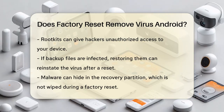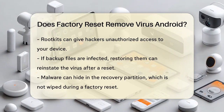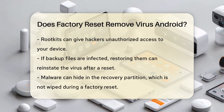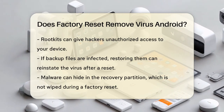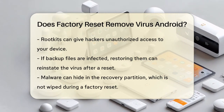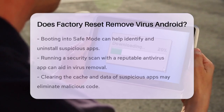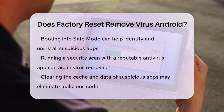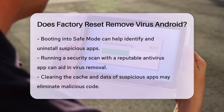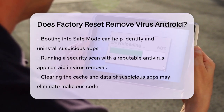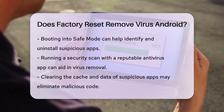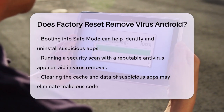Additionally, some malware can hide in places like your phone's recovery partition or in external devices such as Wi-Fi adapters or keyboards. A factory reset does not wipe the recovery partition, so if the virus is hiding there, it won't be removed.